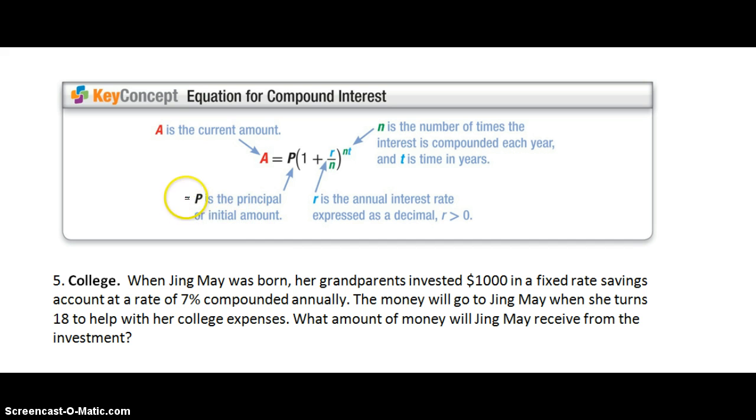So our lowercase a is changed to a capital P. And now our capital A is the current amount of money so that's going to be how much money we have after the interest is added to our initial amount. So let's see how we can use this in our first example.